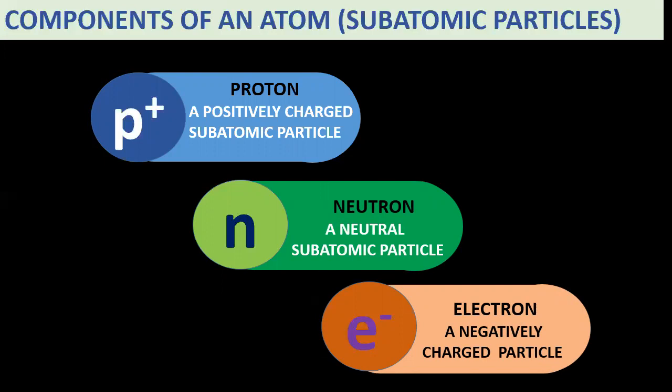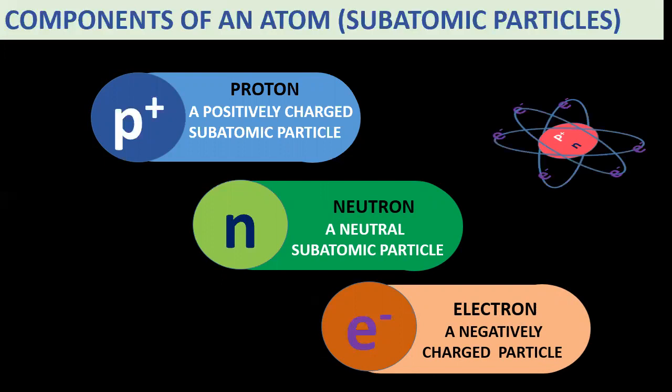So, the proton is positive, the electron is negative, and the neutron is neutral. If you look at the imaginary structure of the atom, the proton and neutron are located in the center — the nucleus. The atomic mass is concentrated there. Electrons, on the other hand, don't have specific orbits, but we place them in energy levels outside the nucleus to better understand atomic characteristics.